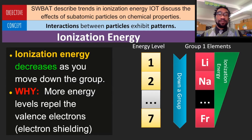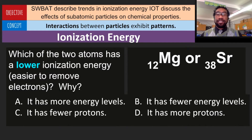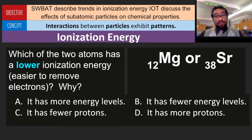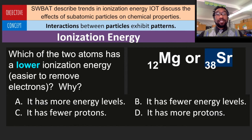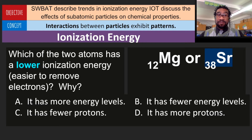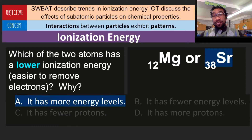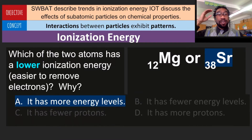Let's put this into practice. Which of the two atoms has a lower ionization energy, or which is it easier to remove electrons from? Is it going to be magnesium with atomic number 12, or strontium with atomic number 38? I would definitely choose strontium. These are two elements in the same group — group two on the periodic table — which means the only thing that separates them is the number of energy levels. What makes strontium different is that it has more energy levels. Having more energy levels pushes those valence electrons away very easily, so it requires lower energy to remove them.